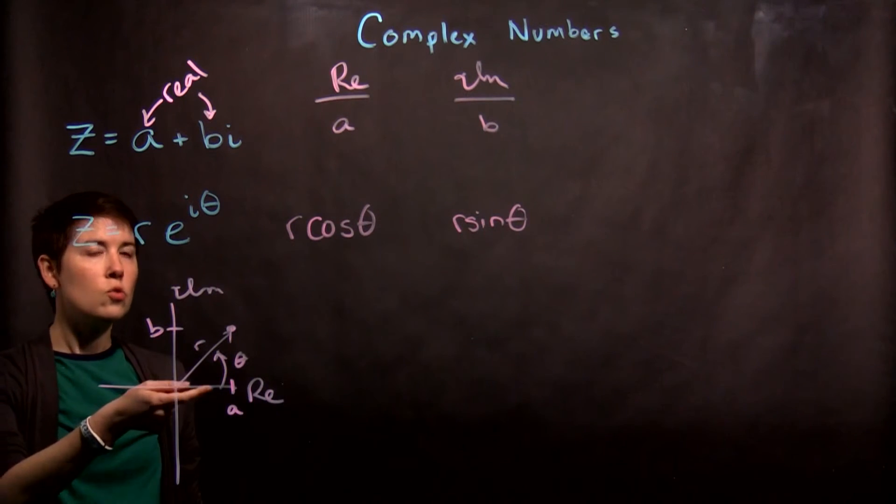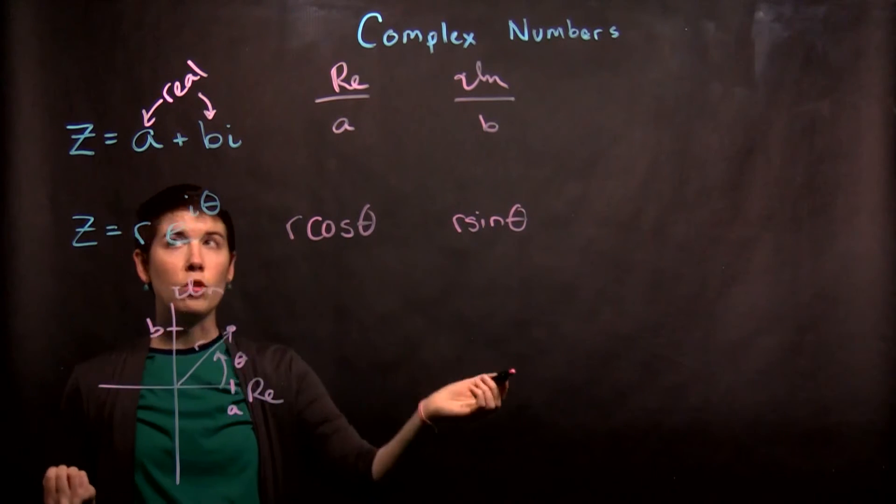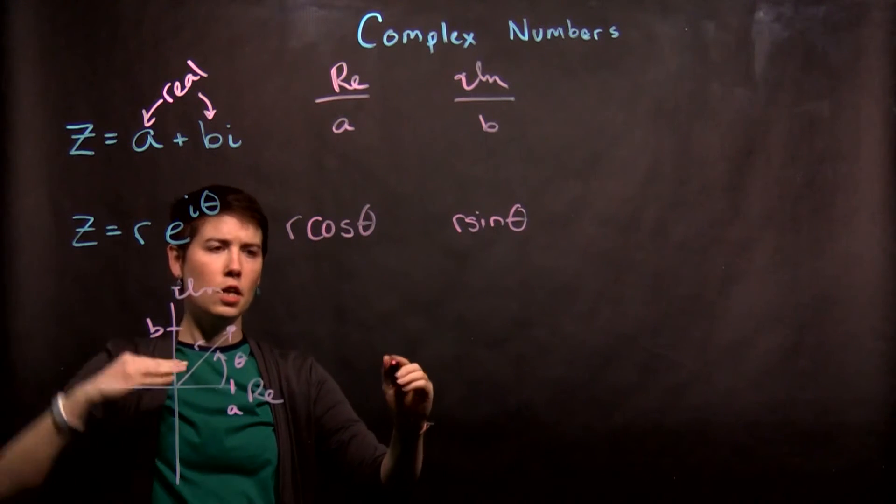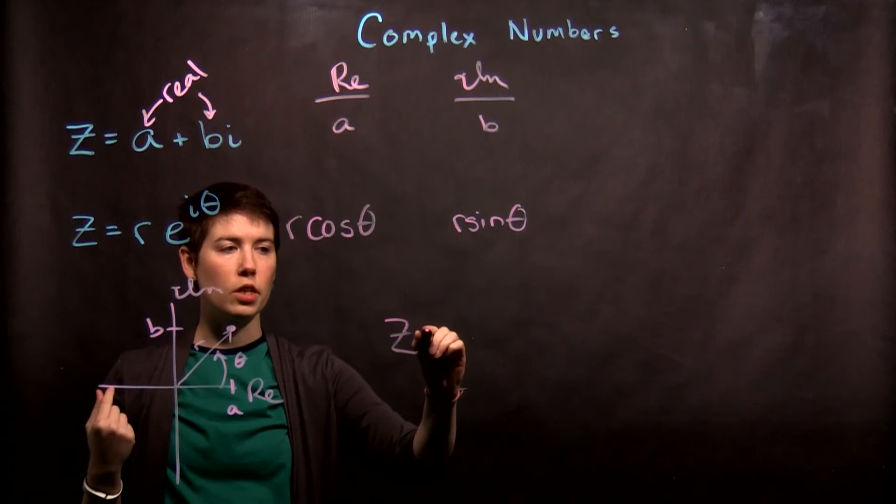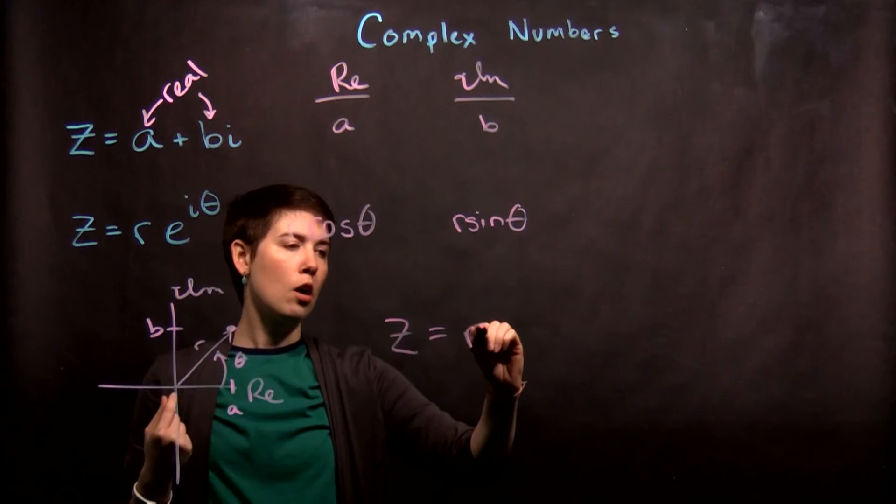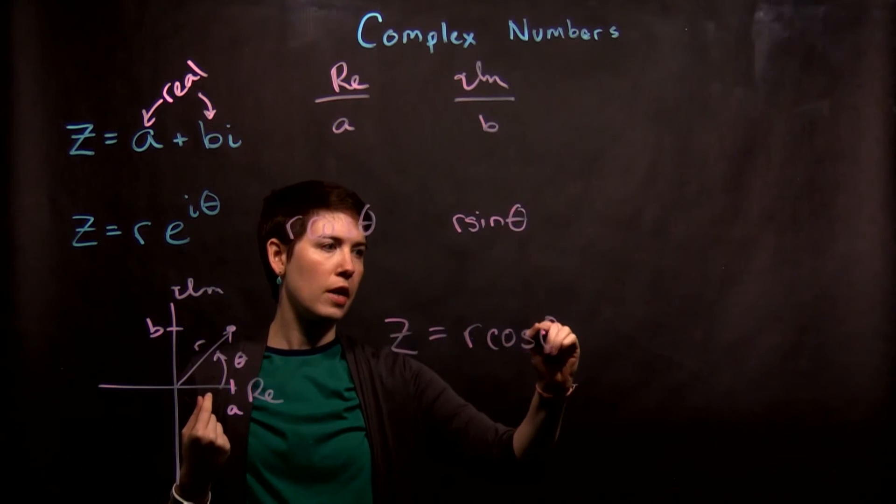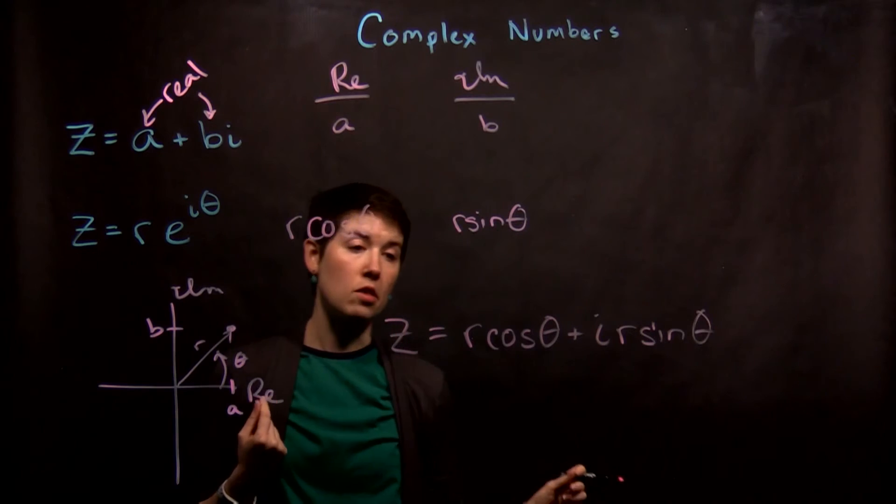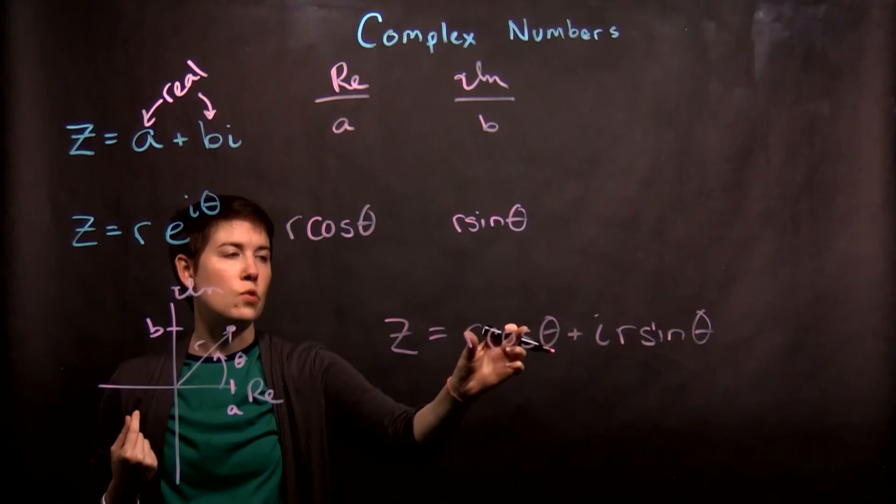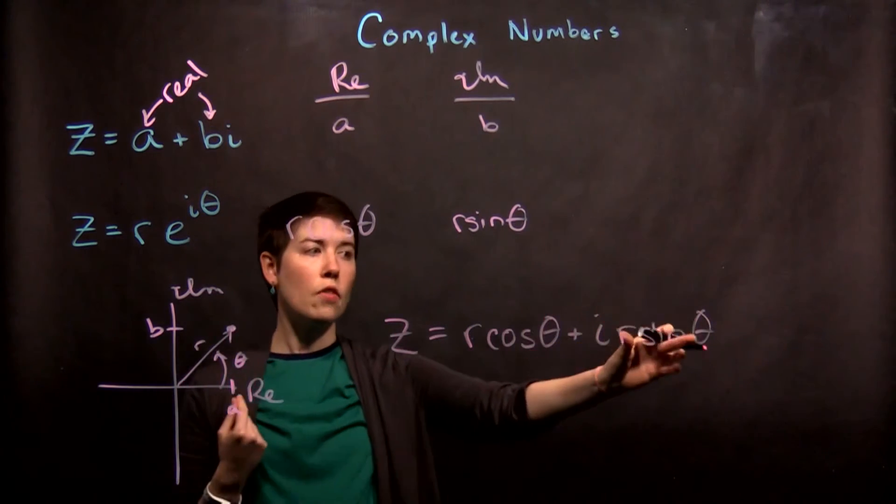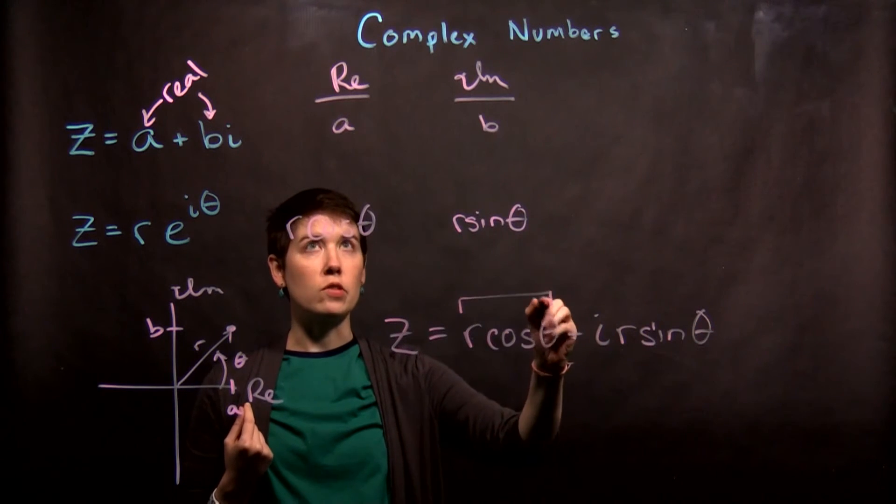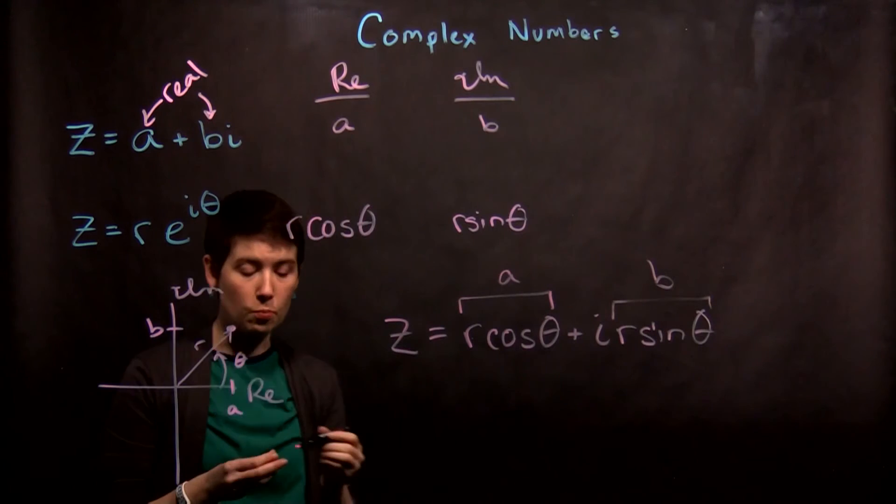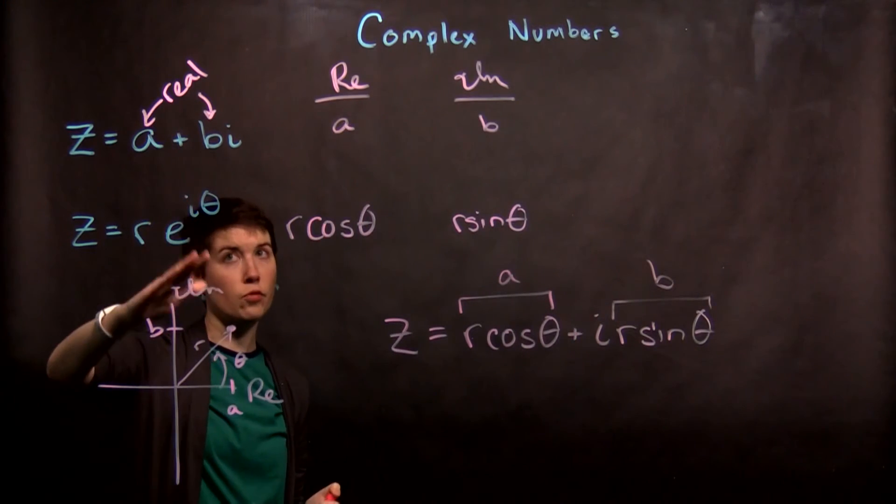So another way of writing out z and it's kind of a way of combining these two together, that's going to be really helpful, is that it is r cos theta plus i r sine theta. So again we have this real term and then explicitly the imaginary term, and so then this is the same as a and this is the same as b. So you can go back and forth between these two different forms.